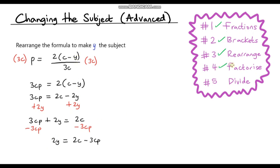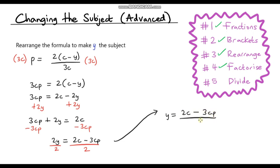We're on to the final step of dividing to get y on its own — we need to divide by 2. Divide the left hand side by 2 and divide the right hand side by 2. Our final answer is y equals 2c minus 3cp all over 2. We can't simplify this any further — 2 divides by 2 but 3 doesn't divide by 2. So this will be our final answer.